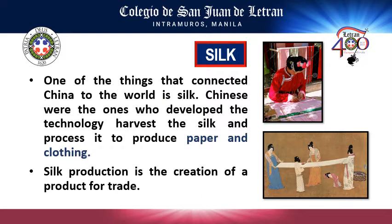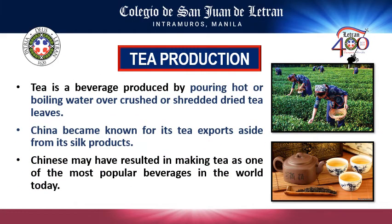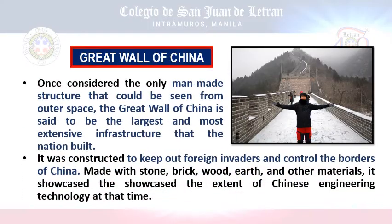One of the contributions made by the Chinese is silk. This silk addressed the problem of mass production in terms of paper and clothing. Another is tea production, which addressed problems in terms of health. The Chinese believe that tea is good for health. Furthermore, China became known for its tea production exports alongside its silk marketable production.